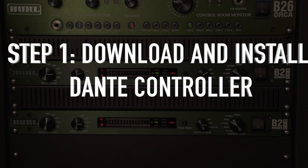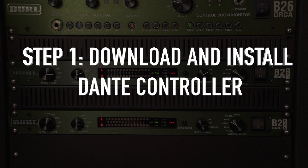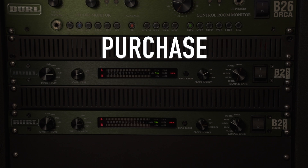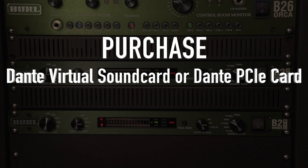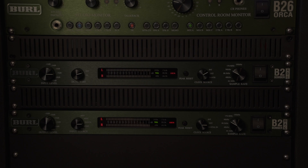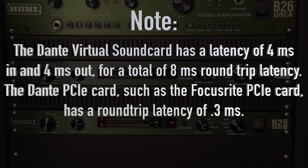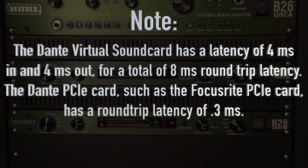Dante quick start. Step 1: Download and install the Dante controller, and purchase the Dante virtual sound card or the Dante PCIe card. Note: the Dante virtual sound card has a latency of 4ms in and 4ms out, for a total of 8ms round trip latency. The Dante PCIe card, such as the Focusrite PCIe card, has a round trip latency of 0.3ms. For this reason, we recommend using the PCIe card.